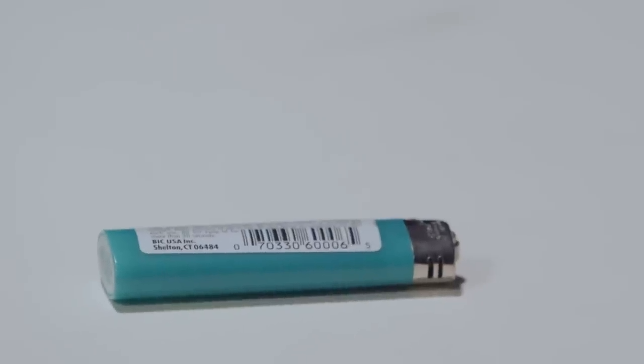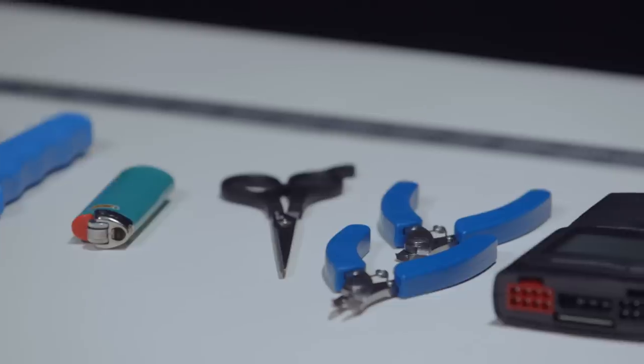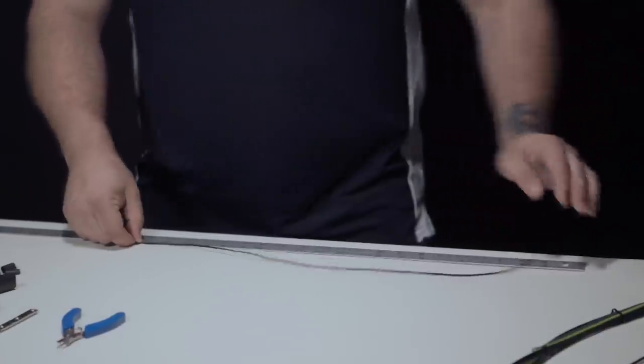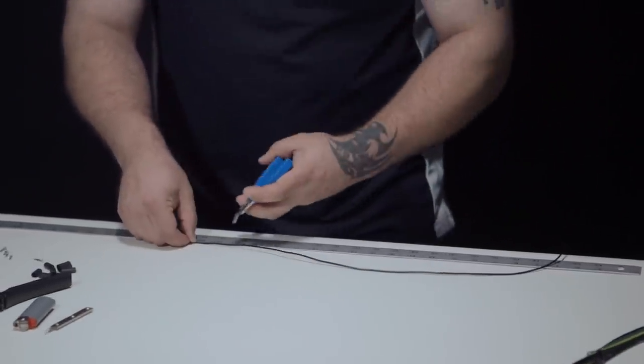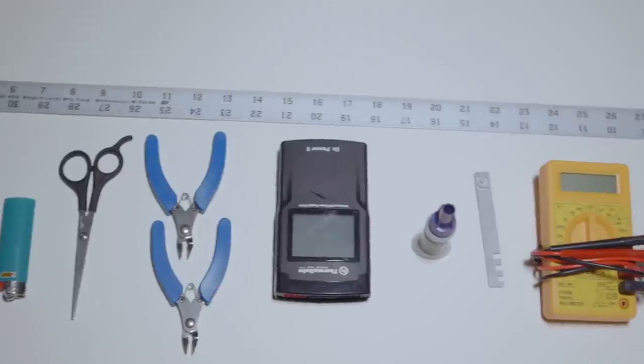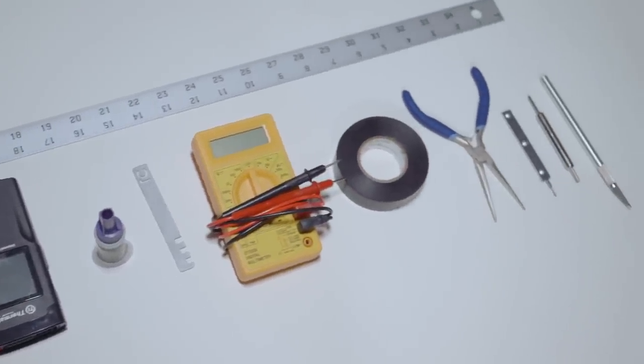Third is a Bic lighter. I like the Bic because it allows me to control how I melt the heat shrink. Next up we have wire cutters. I use this for sleeving and wire cutting. And last but not least is a ruler. That's pretty much all we have for sleeving tools. We won't be using all of them today, but I wanted to show you the basics.